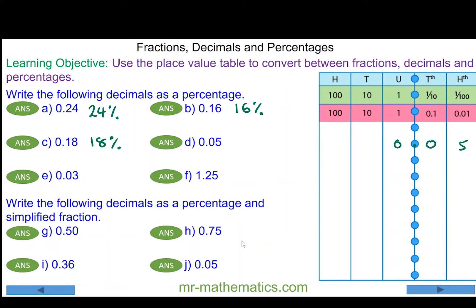For question d, we have 0.05. In this case we only have five hundredths, which is just five percent. Similarly with question e, 0.03 is just three hundredths, three percent.